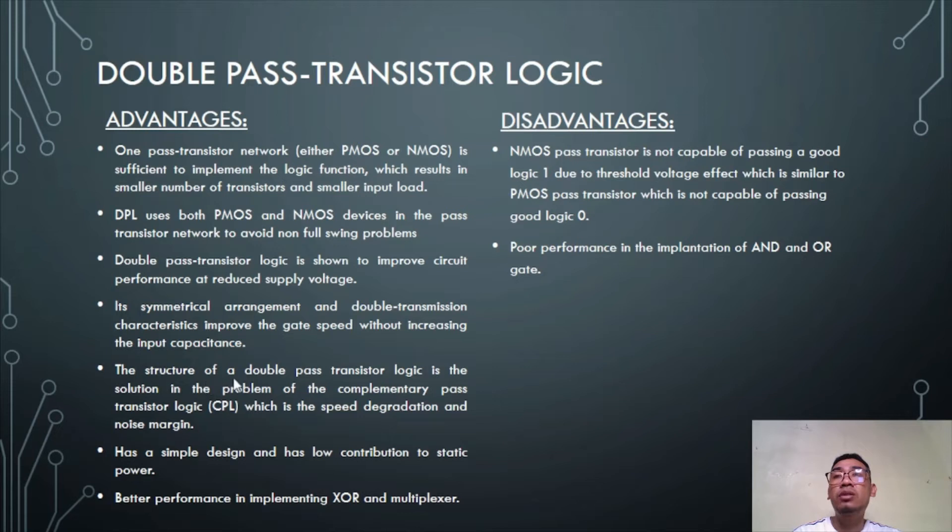Its symmetrical arrangement and double transmission characteristics improve the gate speed without increasing the input capacitance. The structure of double pass transistor logic solves the complementary pass transistor logic CPL problems of speed degradation and noise margin. It also has a simple design and low contribution to static power, with better performance in implementing XOR and multiplexer.